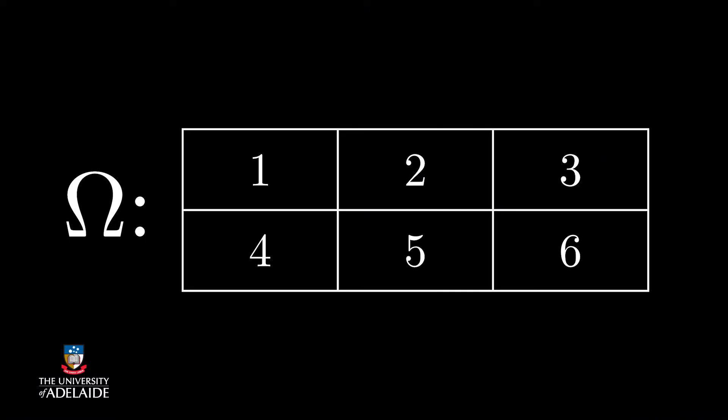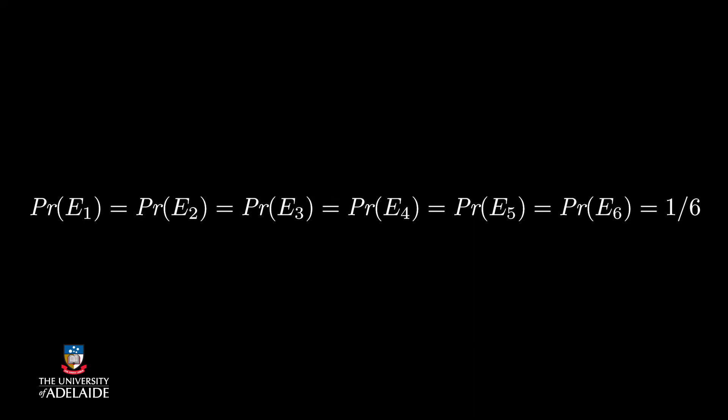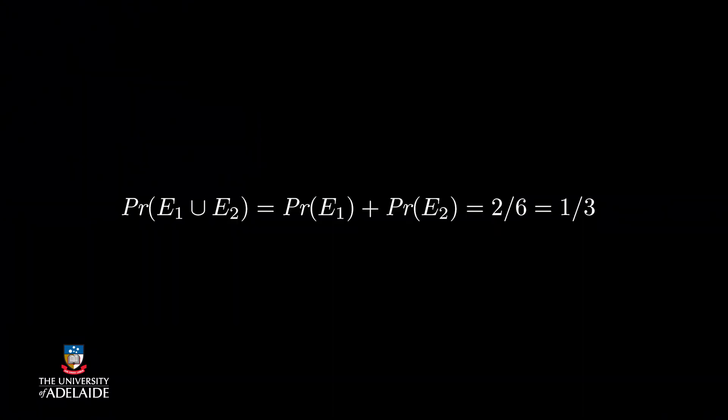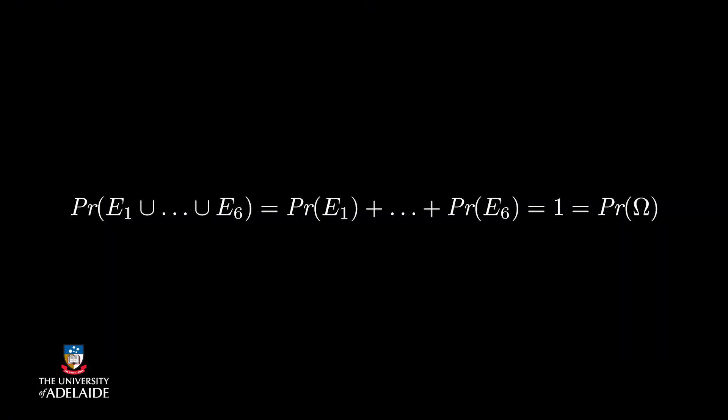Let E_i be the event that we roll an i. Our sample space consists of six events. Let us assume that we have a fair die, meaning that the probability for each number is the same. Now, what is the probability of rolling a 1 or a 2? And how about the probability of rolling a 1 or a 2 or a 3 or a 4 or a 5 or a 6?